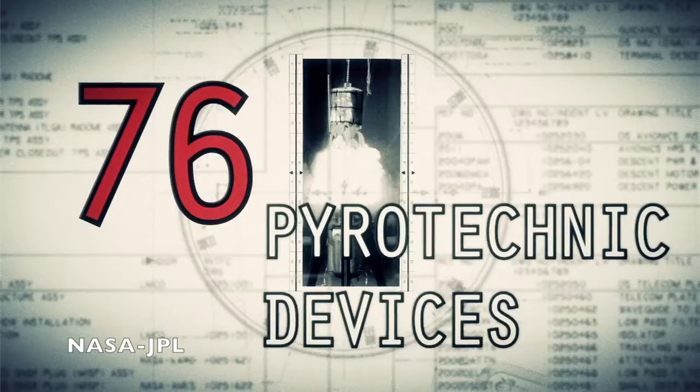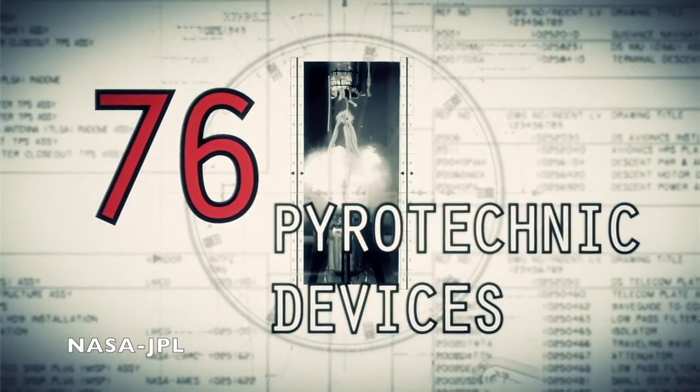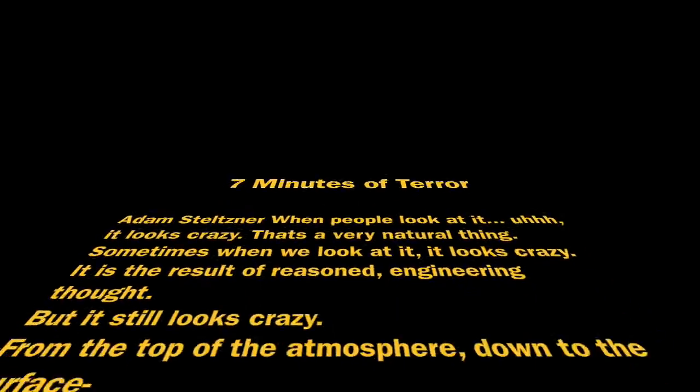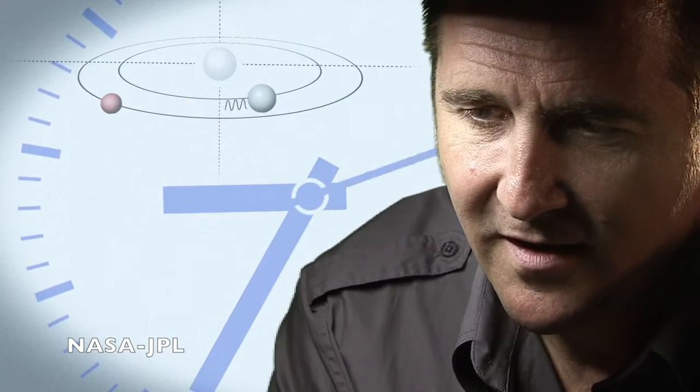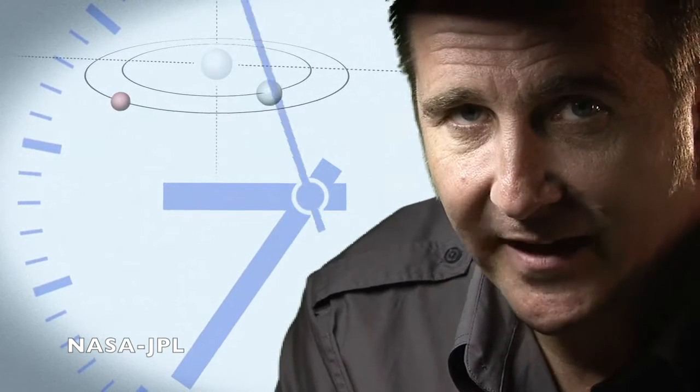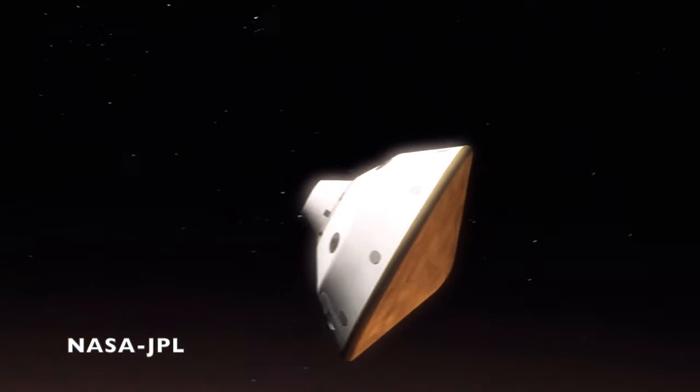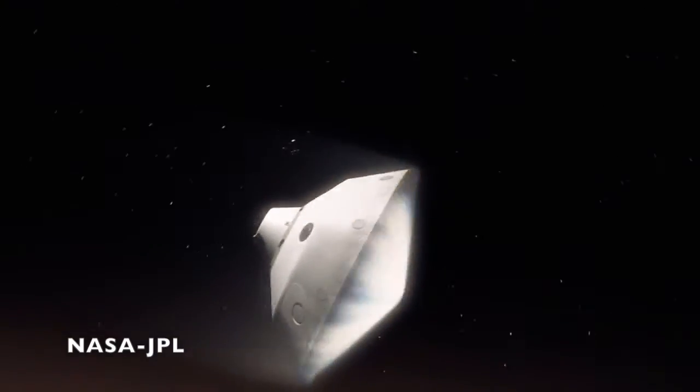But bombarding the viewer with a series of facts is not very effective. Instead, the NASA video organized the information into a story using a three-part structure. First, the setup, which grabs the viewer's attention and sets things in motion: when we first get word that we've touched the top of the atmosphere, the vehicle has been alive or dead on the surface for at least seven minutes.